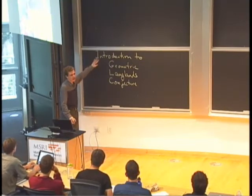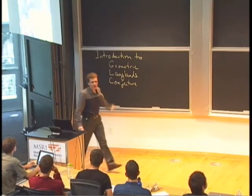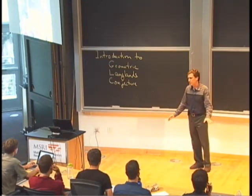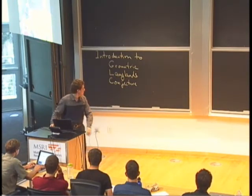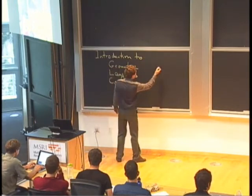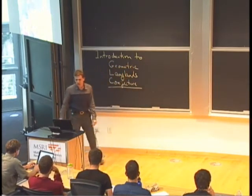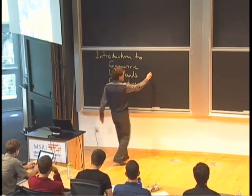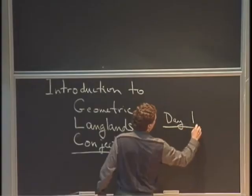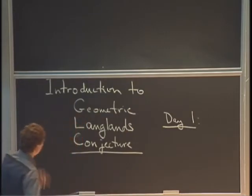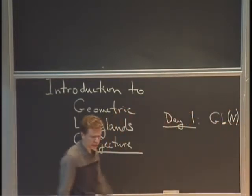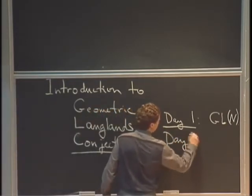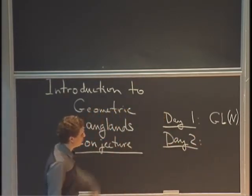I was told to be serious about the introduction part, so this is supposed to be as elementary as possible, which means that quite a few people will probably be very bored by this. But such is life. This is a series of three talks, and the first talk today will just try to formulate the Geometric Langlands Conjecture for the simplest possible case, for the group GL_N. Tomorrow I'll get a chance to talk about other groups.